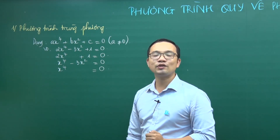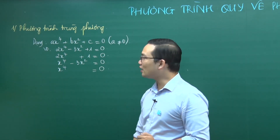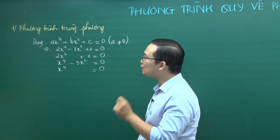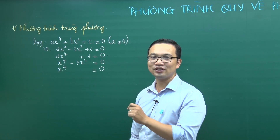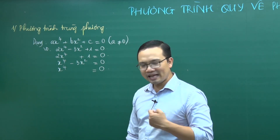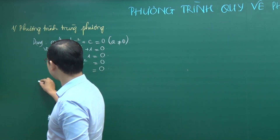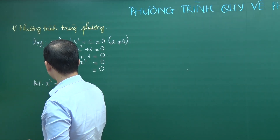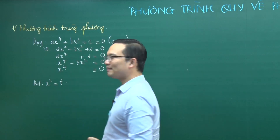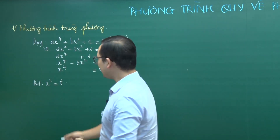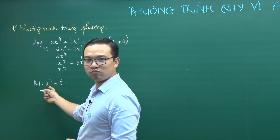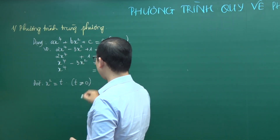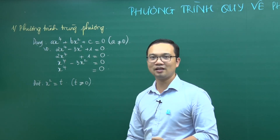Với phương trình trùng phương này, chúng ta sẽ giải như thế nào? Với cấu tạo đặc biệt như vậy, chúng ta sẽ đưa phương trình trùng phương về dạng phương trình bậc 2. Làm thế nào? Các bạn đặt x² = t. Vì x² luôn lớn hơn hoặc bằng 0, điều kiện của t là t ≥ 0.